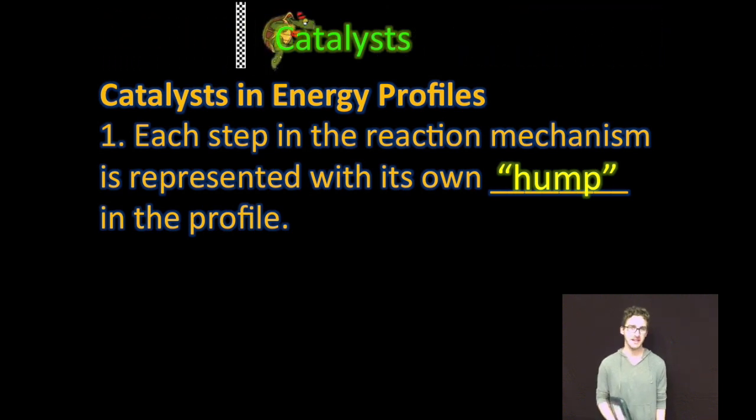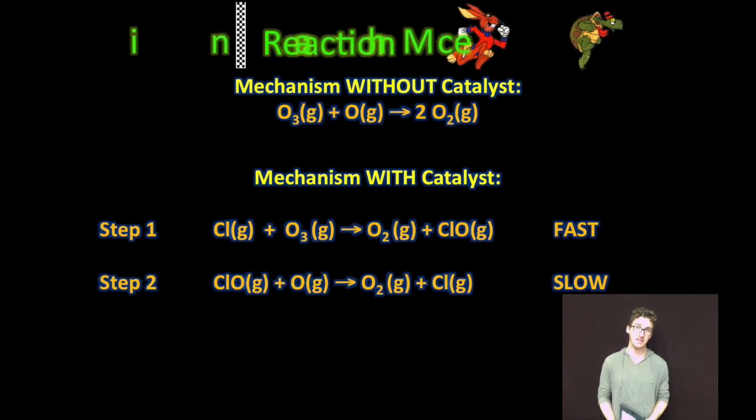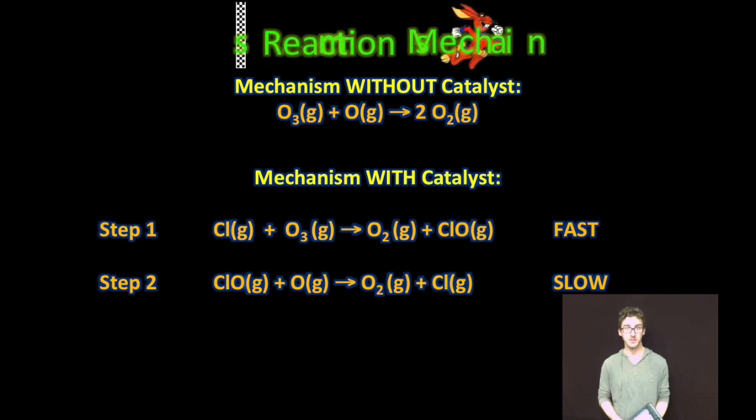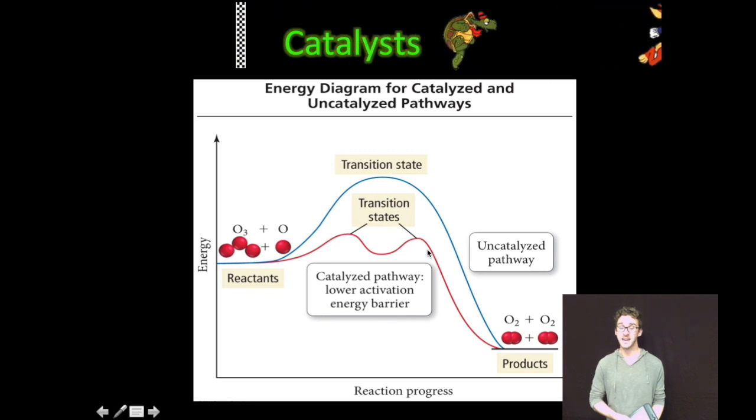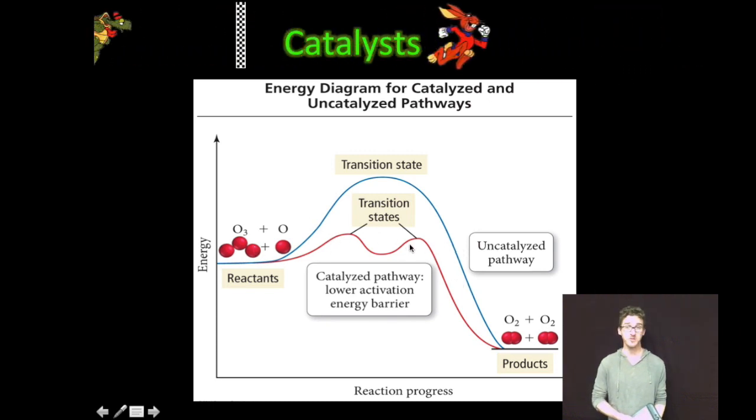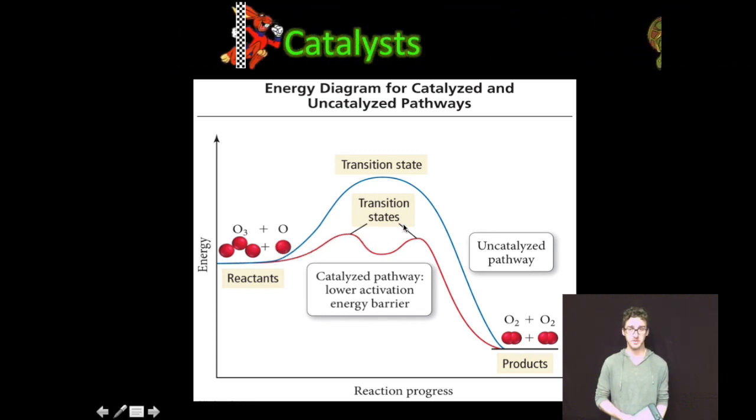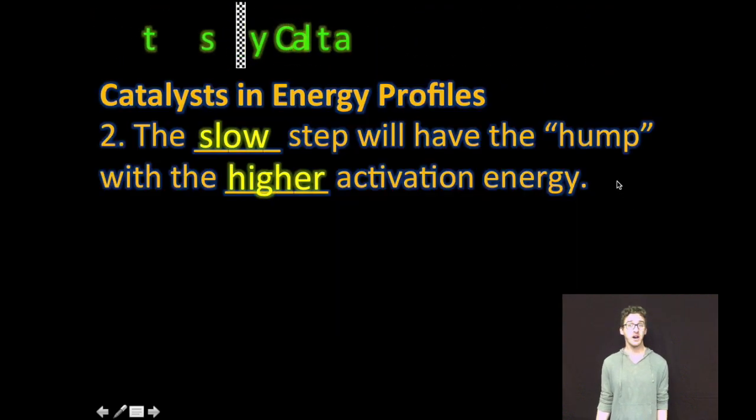Now, each step in the reaction mechanism is represented with its own hump in the profile. So as they come back to this reaction mechanism that describes the decomposition of ozone into oxygen gas, recognize that the catalyzed pathway for this proposed mechanism reduces the activation energy in order for the reaction to proceed. And there are two humps, one for each step of the mechanism.